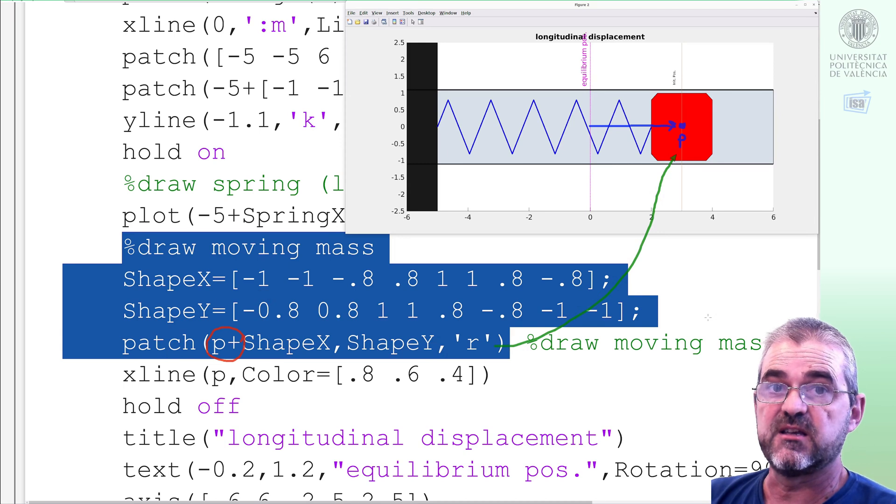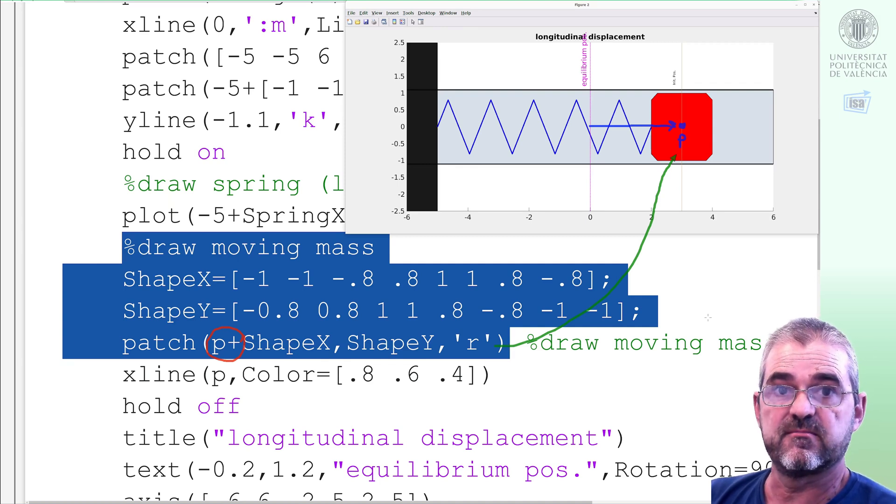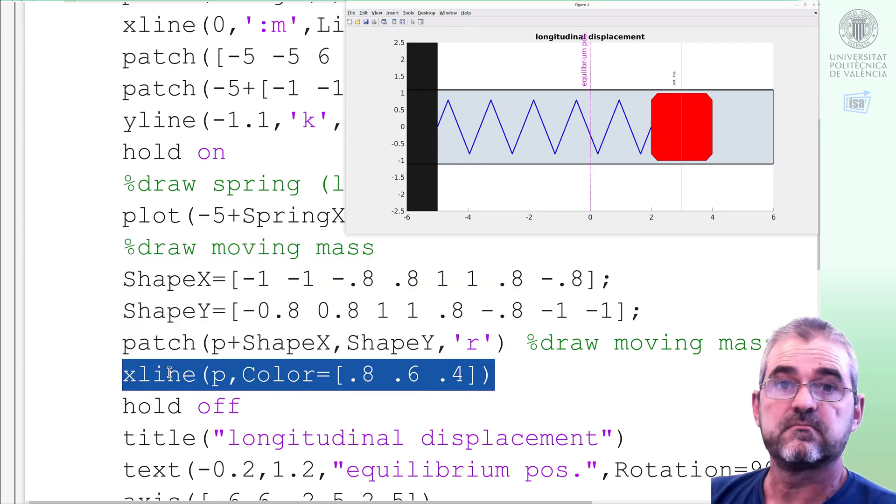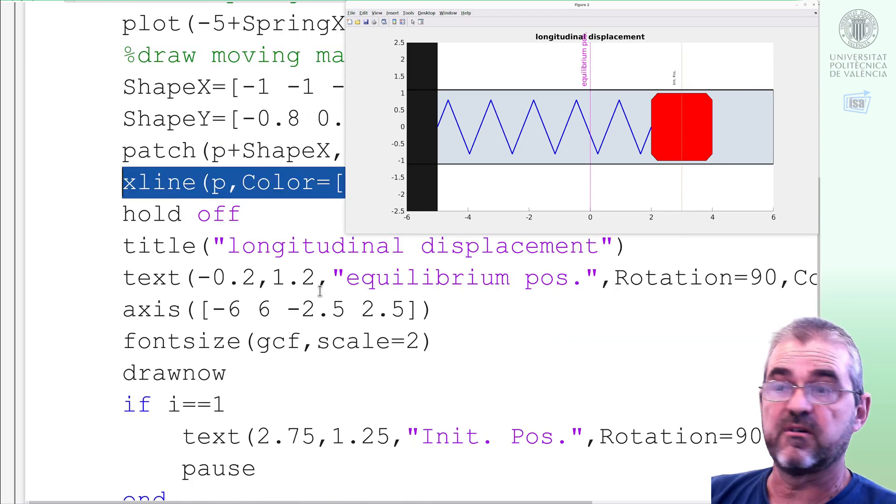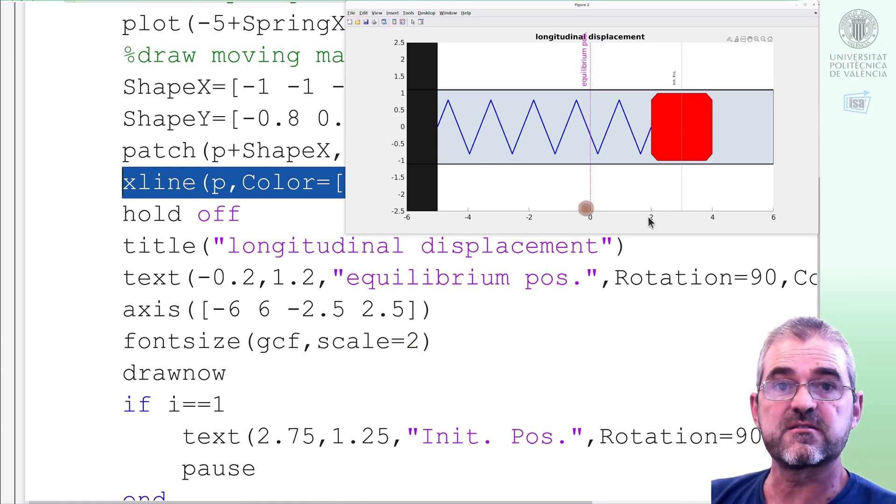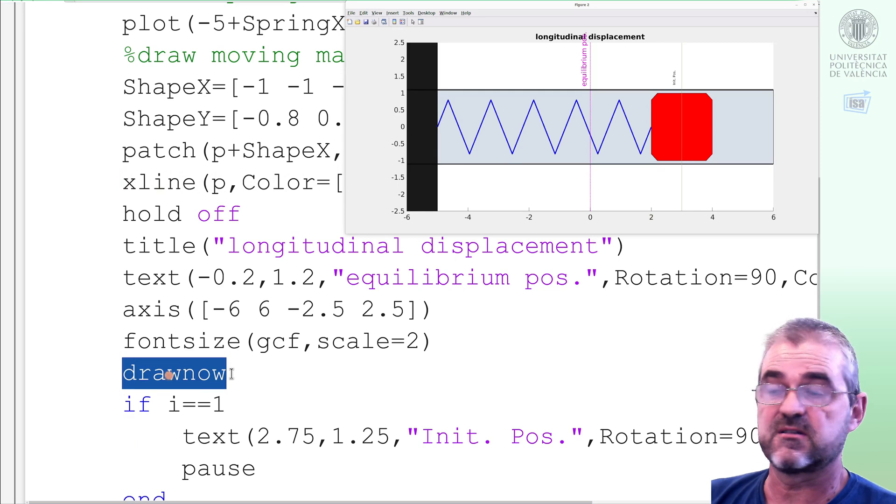Again, you can change shapeX shapeY and look at the documentation of patch to better understand what we are doing here. This xline at position p is this vertical line marking the actual position of the mass. The only remaining things is writing the title, some texts and axes and some font sizes. And this is what it actually draws each frame.